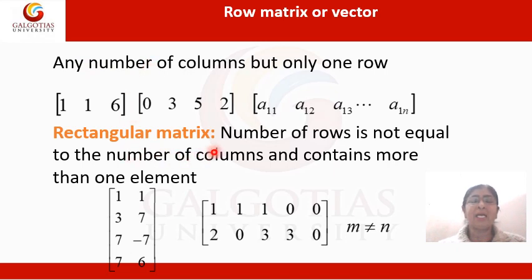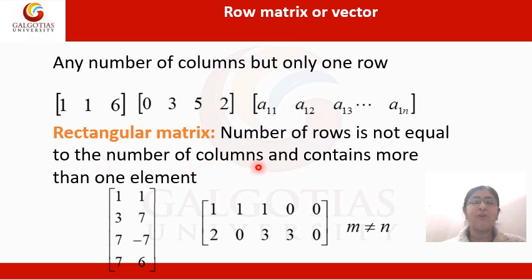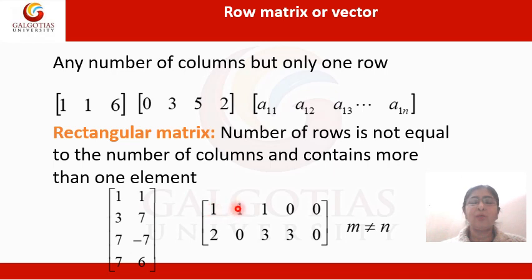Next is a rectangular matrix. The number of rows is not equal to the number of columns, and it contains more than one element. Here, the number of rows is not equal to the number of columns and it contains more than one element — this type of arrangement is said to be a rectangular matrix. In this case, it has 2 rows and 5 columns.